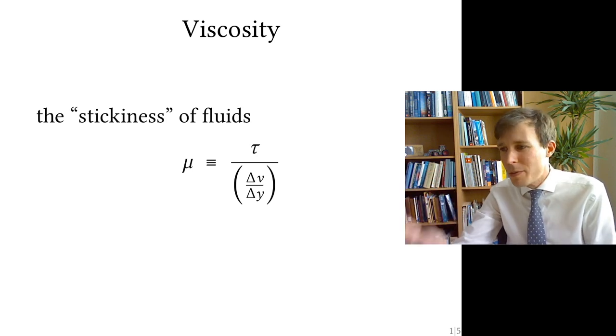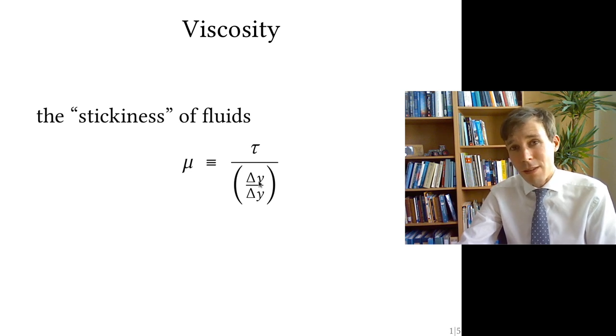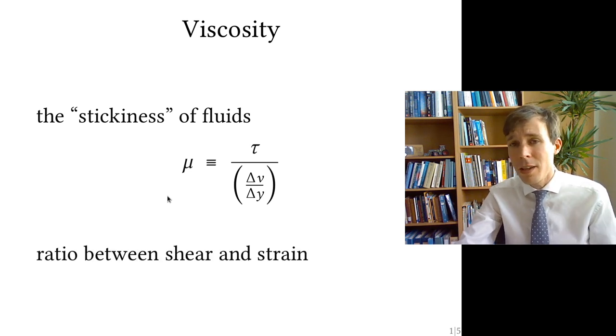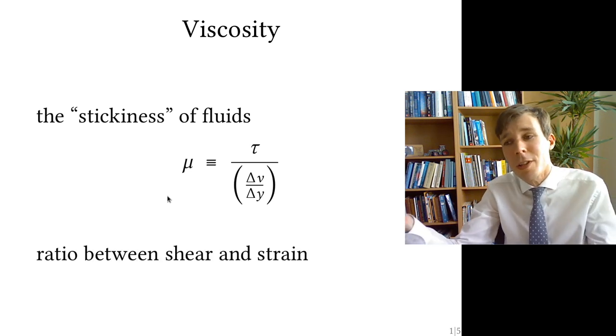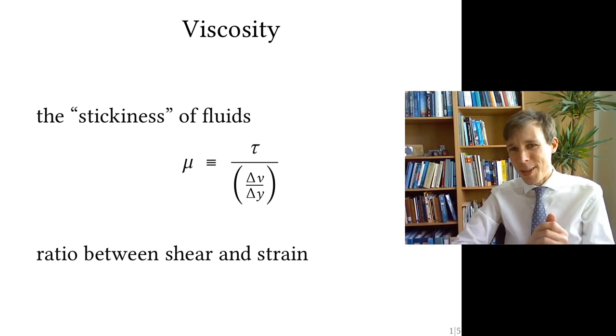And it all goes well until people start dumping that kind of equation on you, like mu is defined by tau divided by some difference in velocity divided by some difference in height. And then they add insult to injury by telling you that it's easy. It's just the ratio between shear and strain. So let's see what this means in practice.